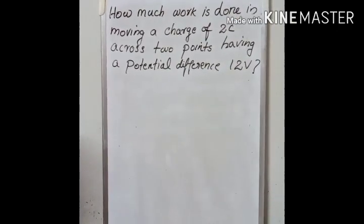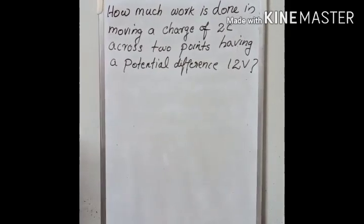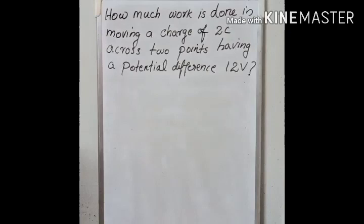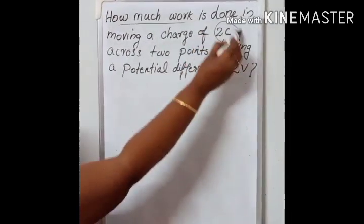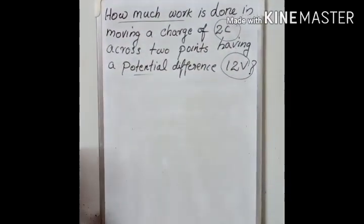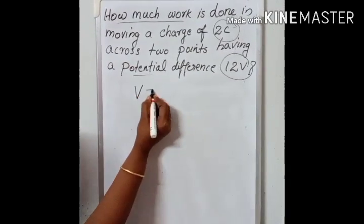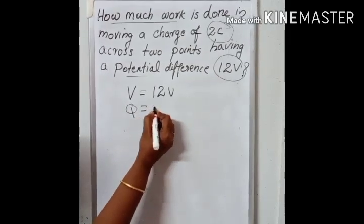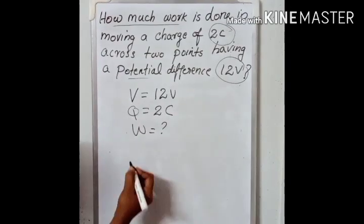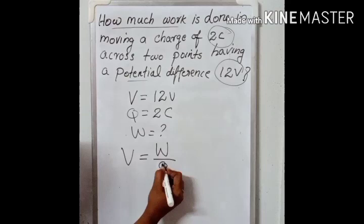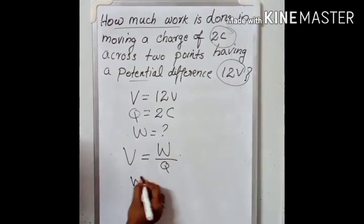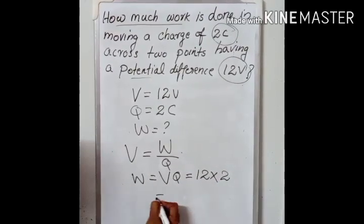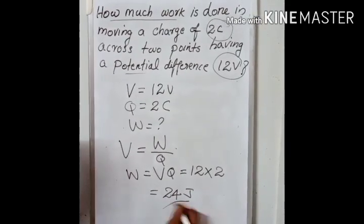Let us do one problem. The problem is: How much work is done in moving a charge of 2 coulomb across two points having a potential difference of 12 volt? The question is, how much work is done? Charge Q = 2 coulomb, V = 12 volt. We already know the equation: potential difference is equal to work done divided by charge. So work done is equal to V into Q, that is 12 into 2, which is 24 joule. That is the answer.